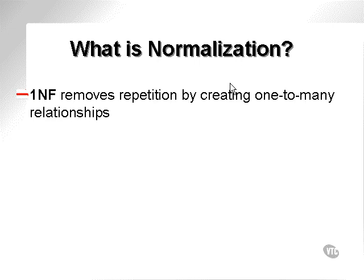So what is normalization in terms of normal forms? What is first normal form? First normal form attempts to remove the repetition within data sets by creating one-to-many relationships.